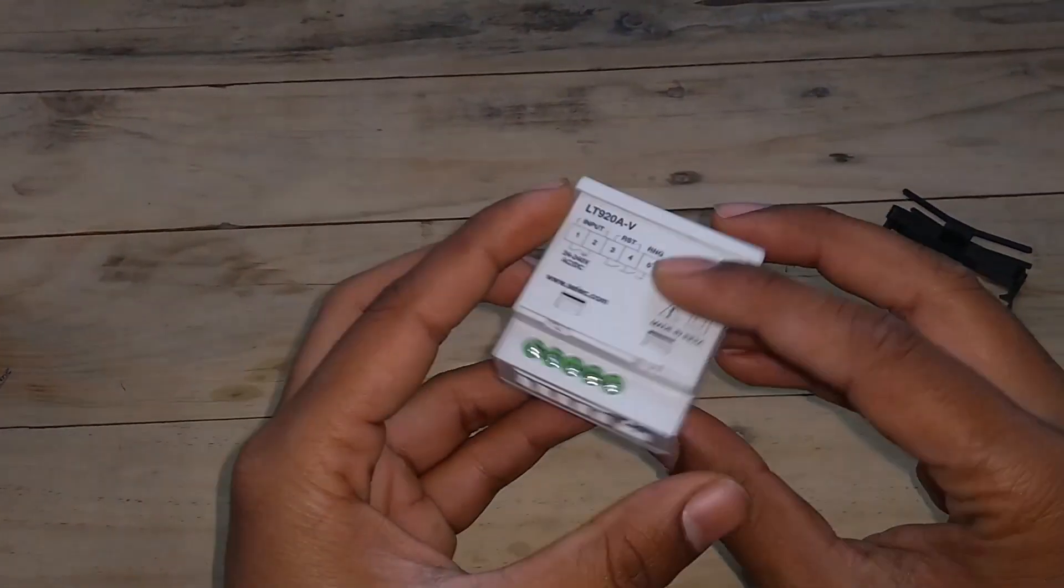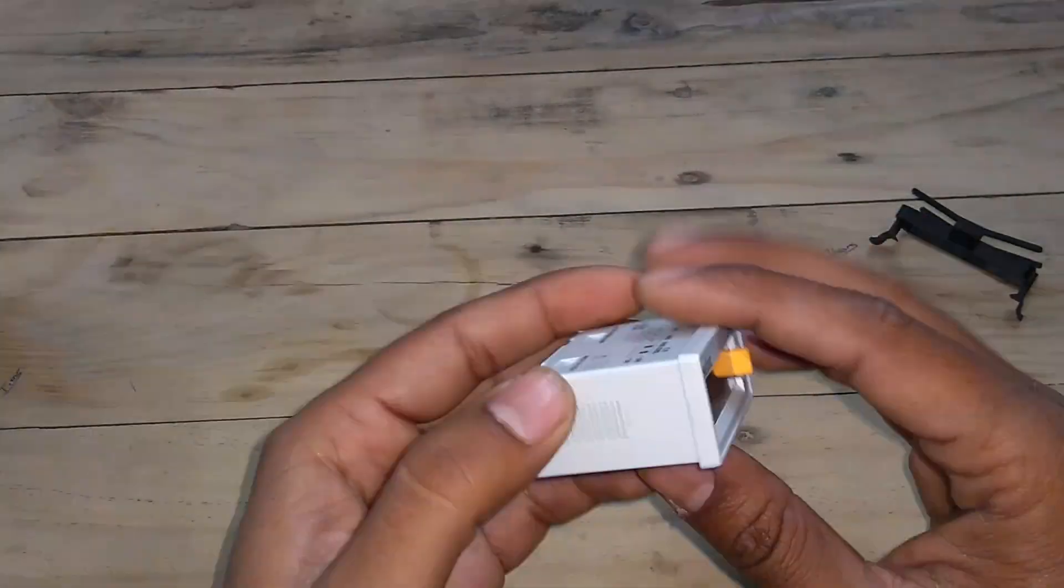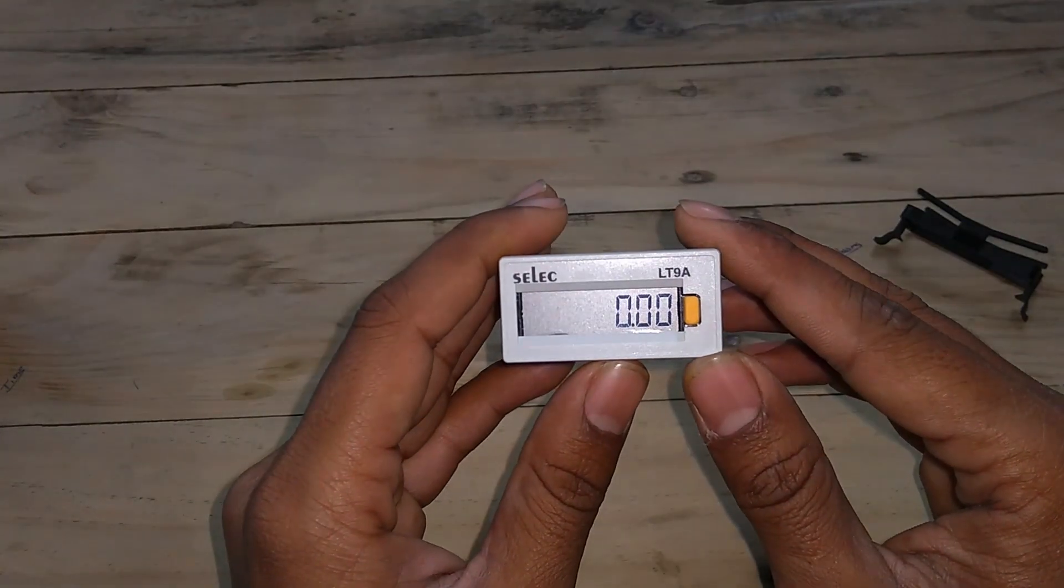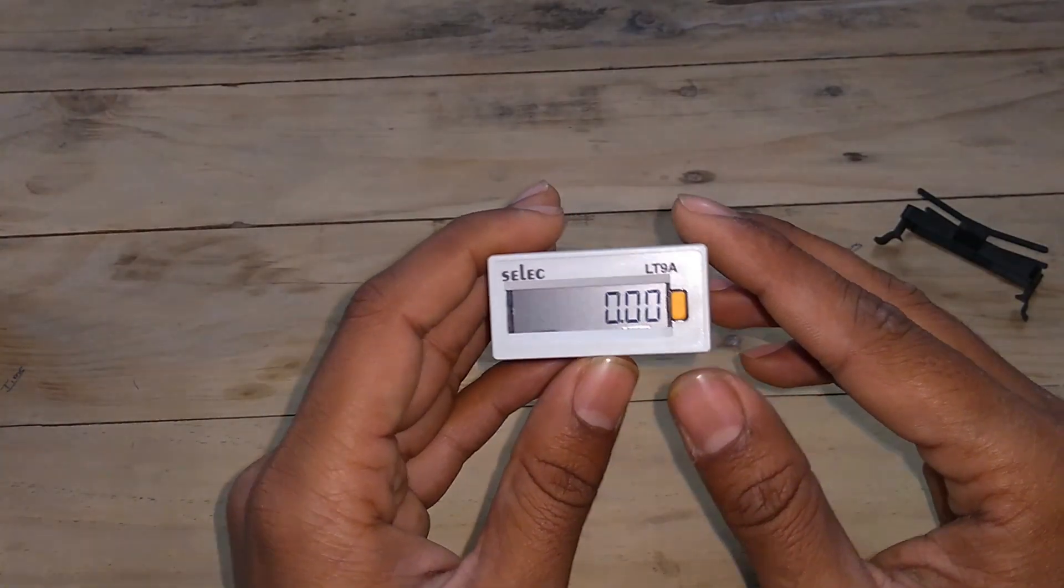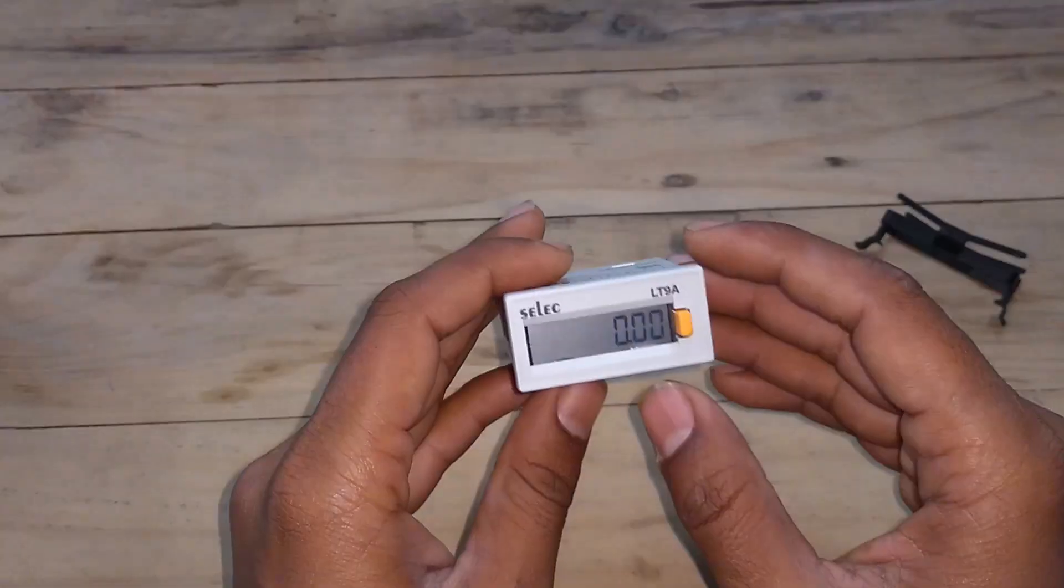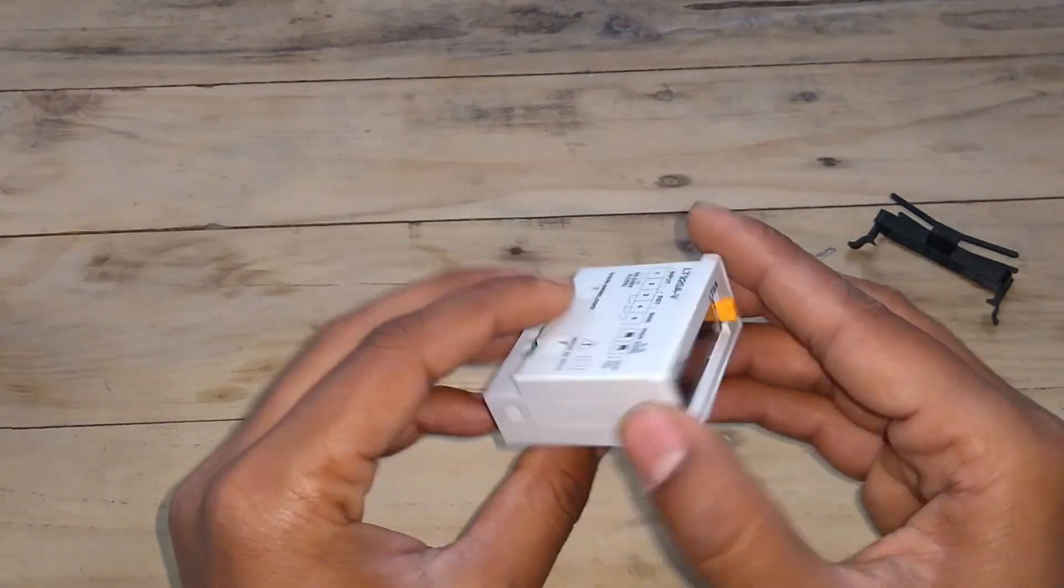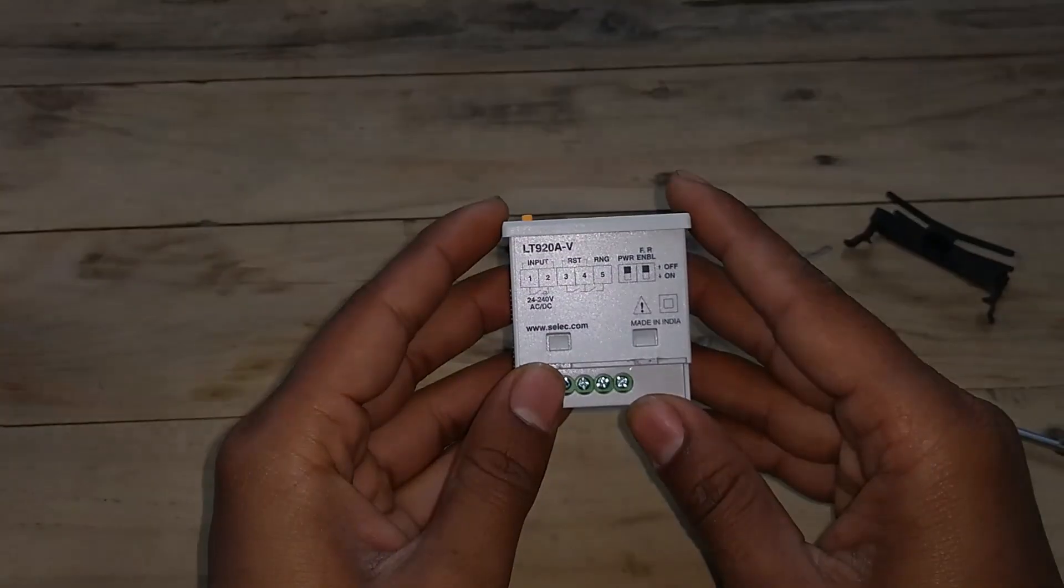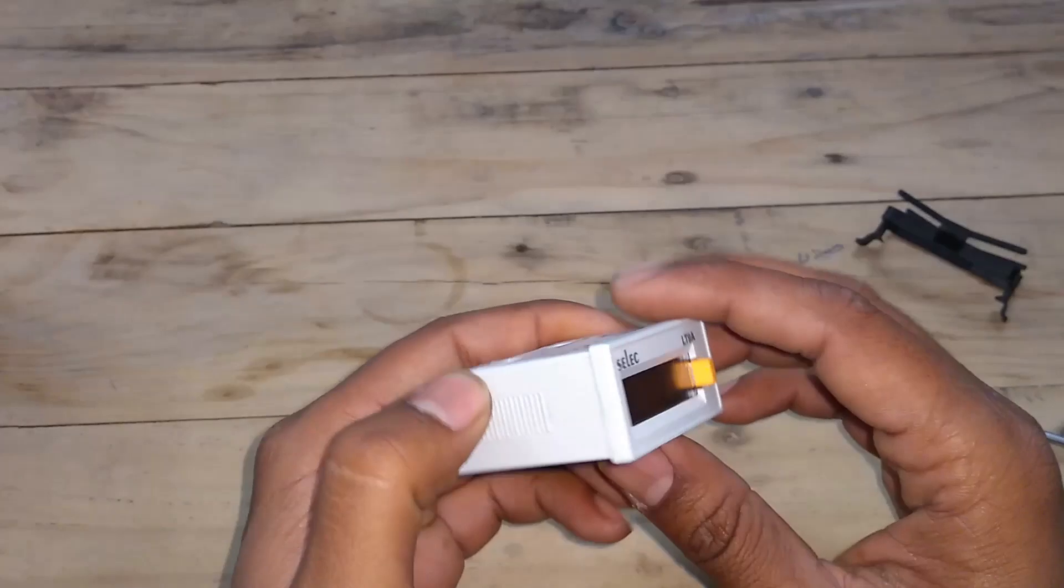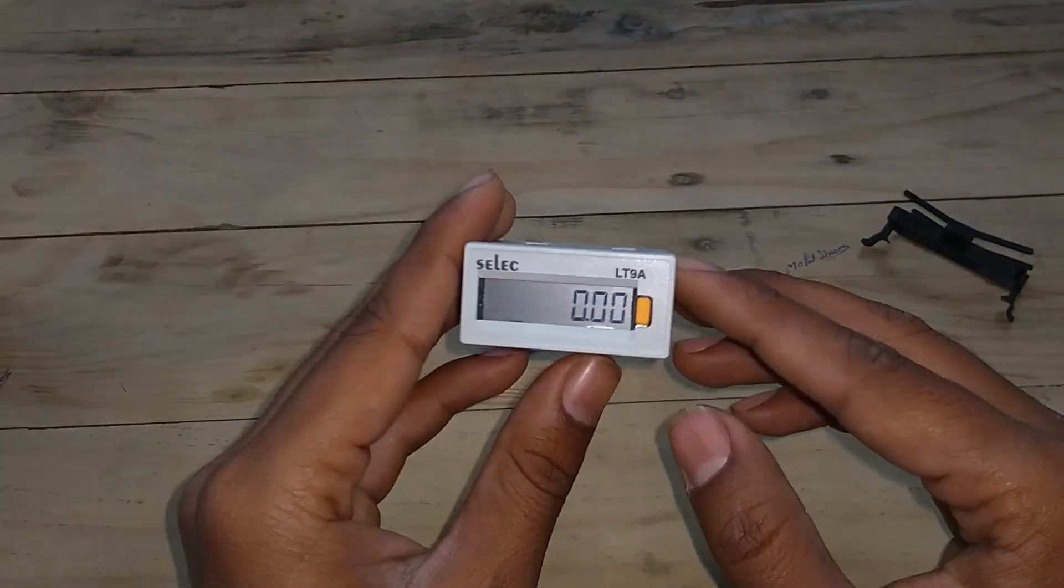There are two options in range. One is for time, which is in hours, minutes, and seconds, and the other one is for minutes only. So now the mode is selected as minutes. You can change it by shorting pin four and five. If you short pin four and five, it will show you the range in hours, minutes, and seconds. So let's try it.